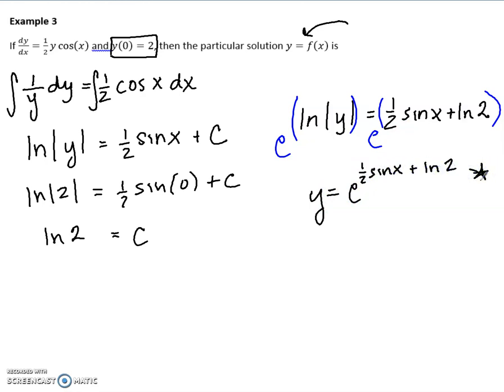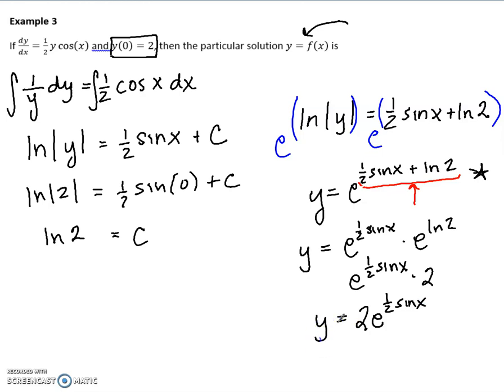Remember, in an exponent, if you have addition, you can separate that using multiplication. Remember, multiplying like bases, you would add their exponents, so I'm separating it back down, and you should see why that was a nice thing. When I separate it, this part is e to the ln of 2. e to the ln cancels, leaving me just with a 2 here, which then I can write 2e to the 1 half sine x, which is obviously a much more concise version of that function.